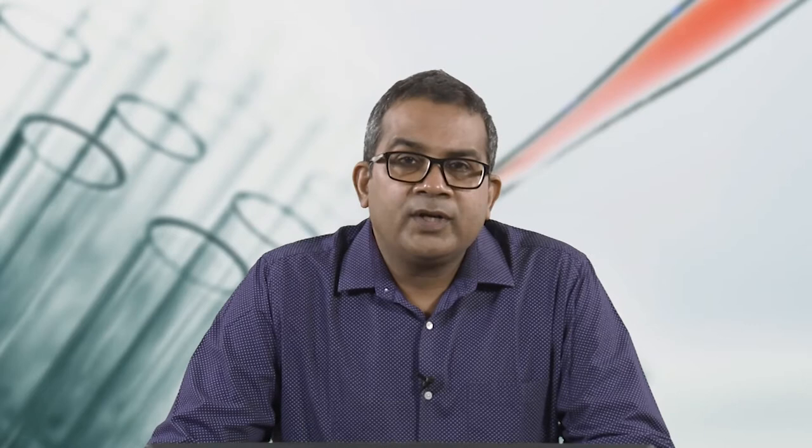Let us have a brief look at the different topics we will cover in this lecture. One is the mode of propagation of monomer units. Monomer units are attached to either the backbone or combine with each other so that the chain length of these polymers increases, and subsequently the molecular weight of these polymer chains becomes large. Molecular weight plays a very vital role as a property-deciding factor, so we need to keep close attention to this propagation step.